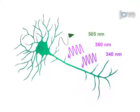505 nanometer emissions from the dye at these two wavelengths are collected, and the level of intracellular calcium can be calculated from the ratio of these values.